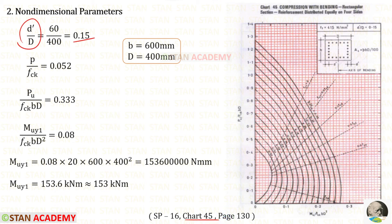I have opened this chart because here we have fy as 415, d' upon D is 0.15 and we know that we are going to distribute the reinforcement equally on the four sides. We know that 0.33 comes between 0.32 and 0.34. So, in between we have to make a horizontal line. p upon fck is 0.052. It comes between the curves 0.04 and 0.06. In between both of the curves, we have to make a line.